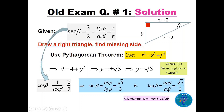So this is r over x, so the hypotenuse here is 3 and the adjacent of beta is x equals 2. Let's use the Pythagorean theorem: x squared plus y squared equals r squared, so 9 equals 4 plus y squared. y will be plus or minus square root of 5. We take the positive because angle beta is acute, so it is in quadrant 1.